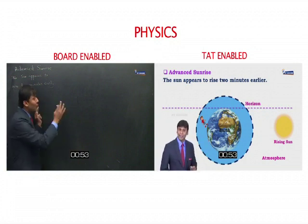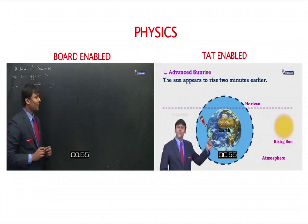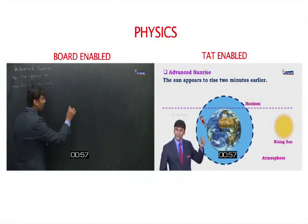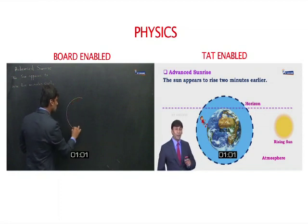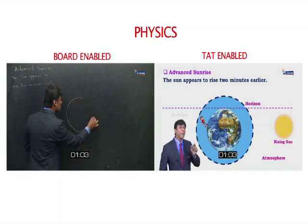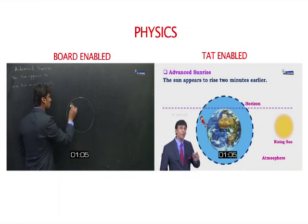For this, I am going to draw a diagram on the board. Let us understand. When they enter the Earth's atmosphere, there is refraction of light. Because of refraction, the light bends. This is how it happens.